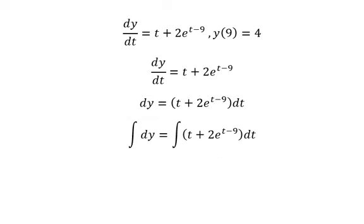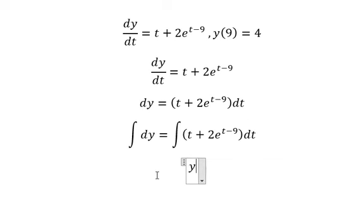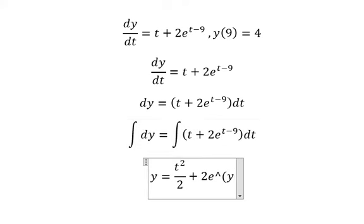Next, the integral of dy you got about y. The integral of t you got about t squared over 2. The integral of e to the power of t minus 9 you got about 2e to the power of t minus 9.